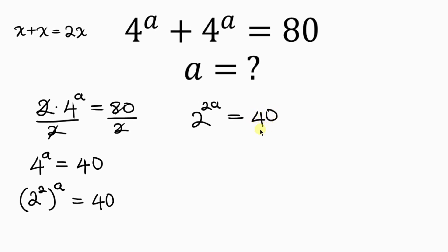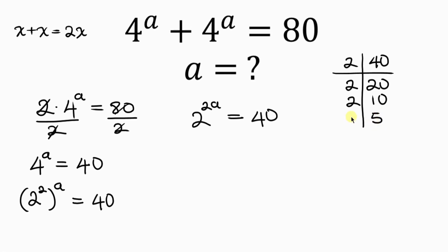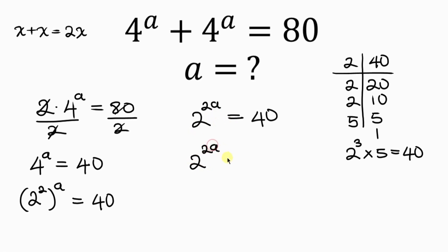Our next step is to break down 40 using division. 40 divided by 2 is 20, 20 divided by 2 is 10, 10 divided by 2 is 5, and 5 divided by 5 is 1. So we have 2 to the 3 times 5, which results to 40. This becomes 2 to the 2a equal to 2 to the 3 times 5.